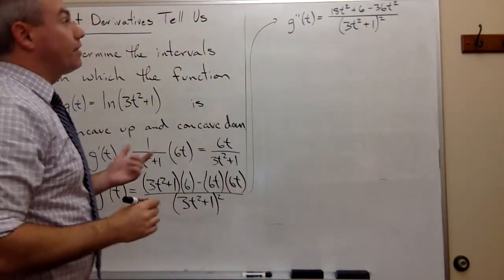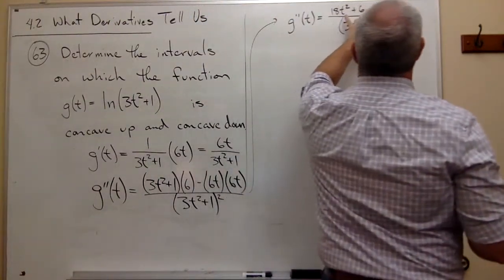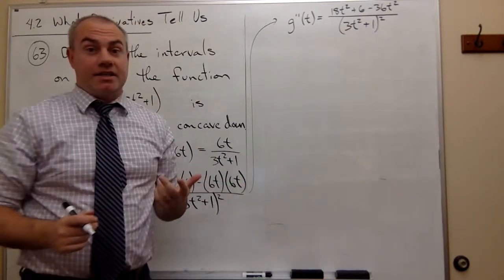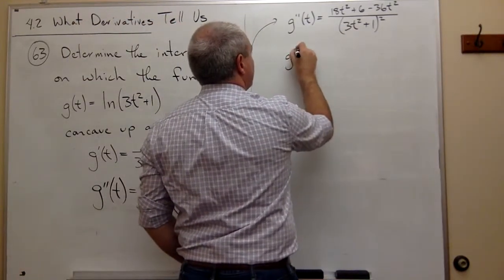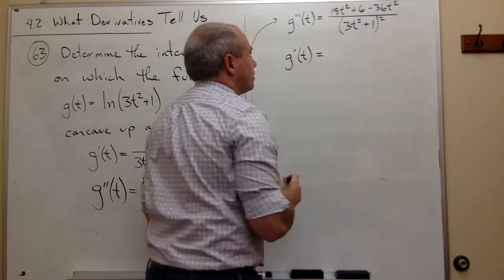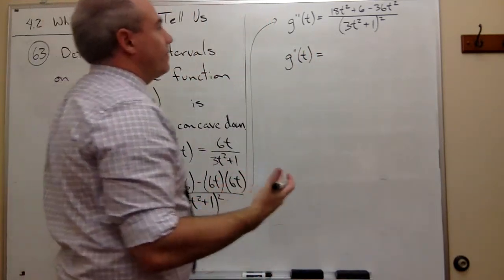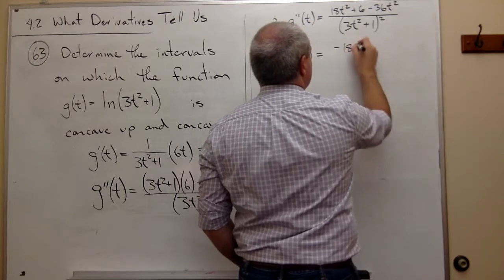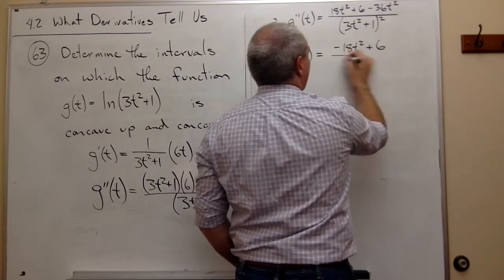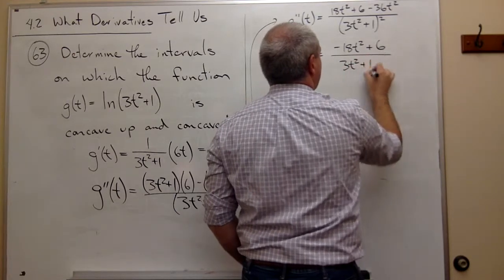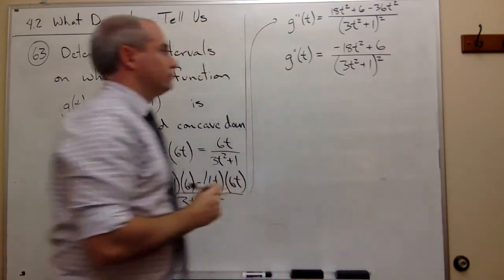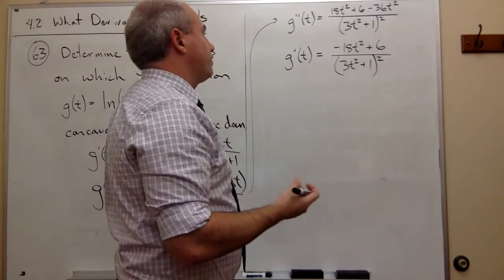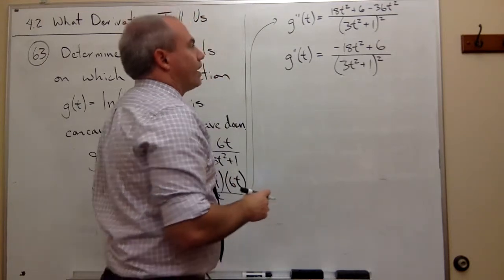On top, I see right now that I'm going to get 18t² minus 36t² is minus 18t². So I could rewrite this as g''(t) is equal to, and I could even factor out a 6, but maybe I should take that in the next step. So I've got -18t² + 6 over (3t² + 1)². If I wanted to here, I could factor something out, but I don't think I need to. I think right now I'm good to go.